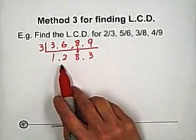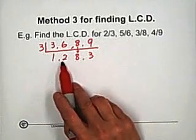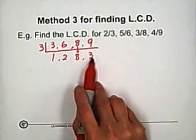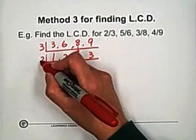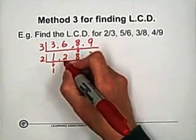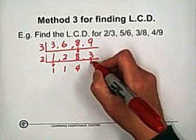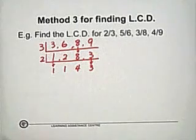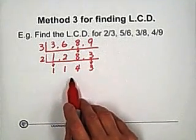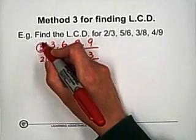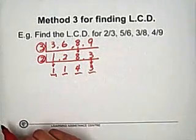Now check the new row of numbers: 1, 2, 8, 3. We can find a common factor for 2 and 8, which is 2. Since 1 is not divisible by 2, carry 1. 2 divided by 2 equals 1. 8 divided by 2 equals 4. And 3 is not divisible by 2, so carry 3. The quotients are now 1, 1, 4, 3 — no more common factor for any two of them.